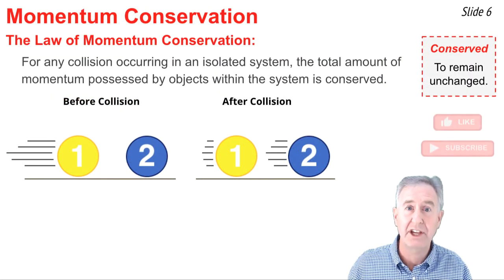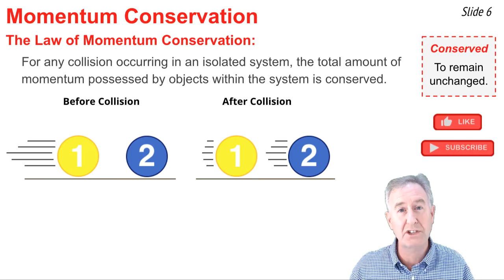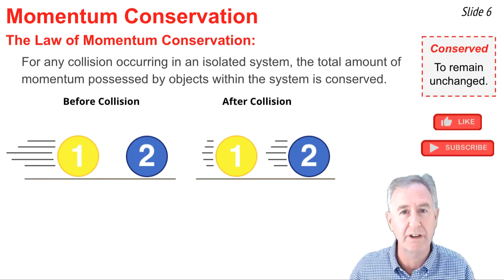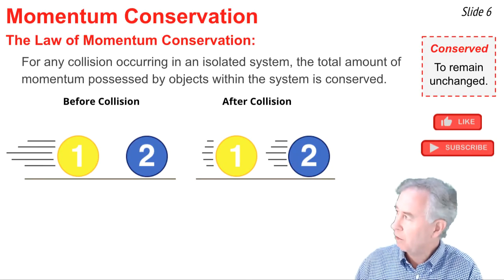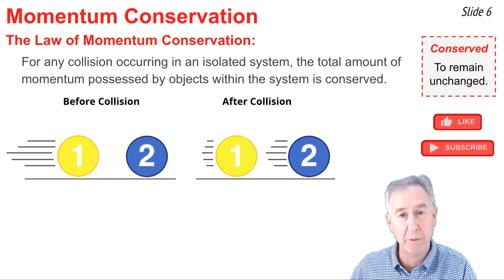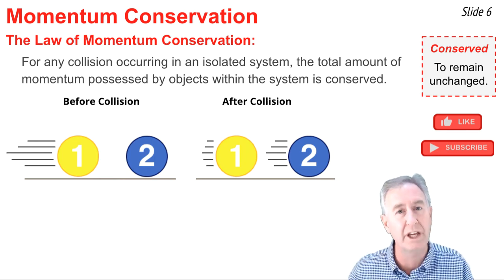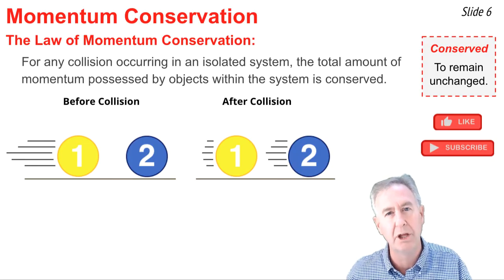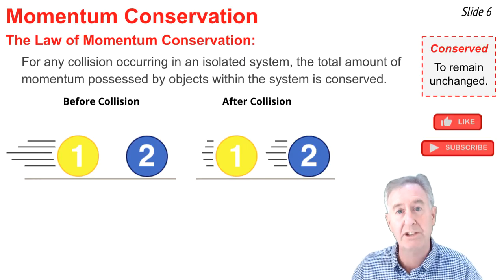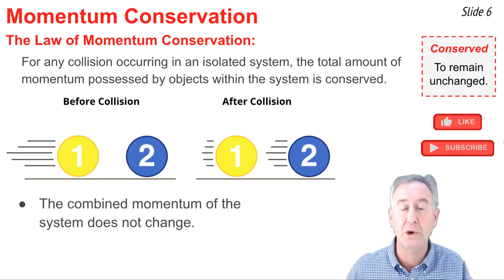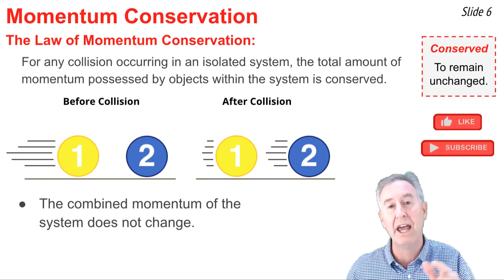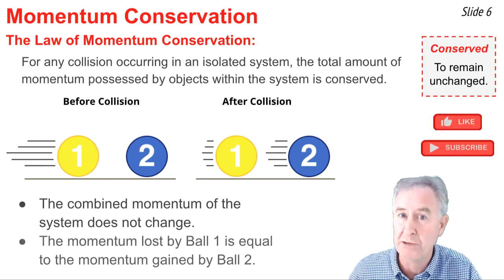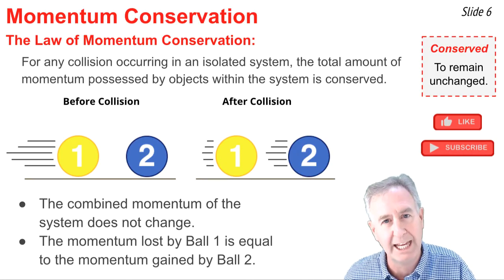The law of momentum conservation states this: for any collision occurring in an isolated system, the total combined momentum of the two objects is conserved — that is, it remains unchanged. In this example, ball two is originally at rest with zero momentum, but ball one is moving. As a result of the collision, ball two is set in motion and has gained momentum, but ball one is moving slower and has lost momentum. The law states that the total momentum before the collision is the same as after. The momentum lost by ball one must be equal to the momentum gained by ball two.